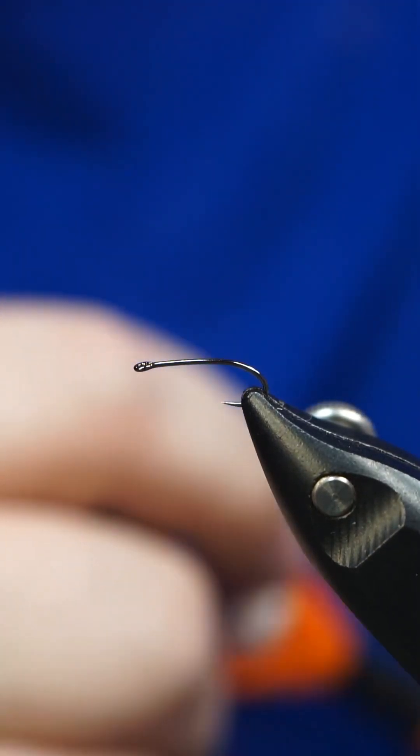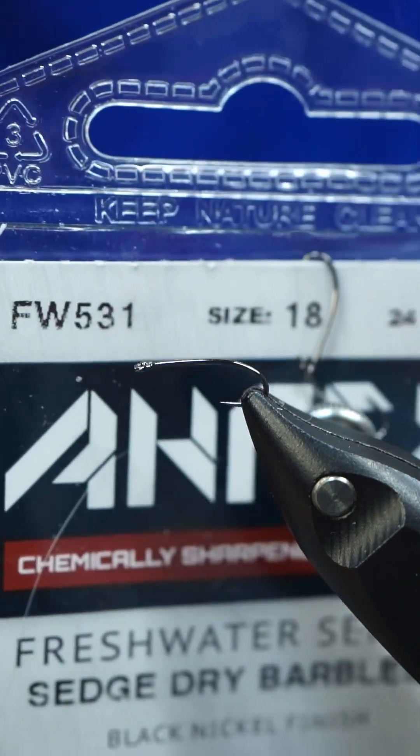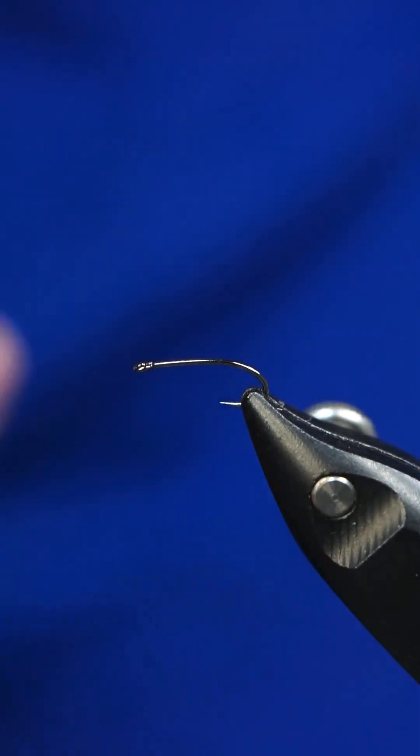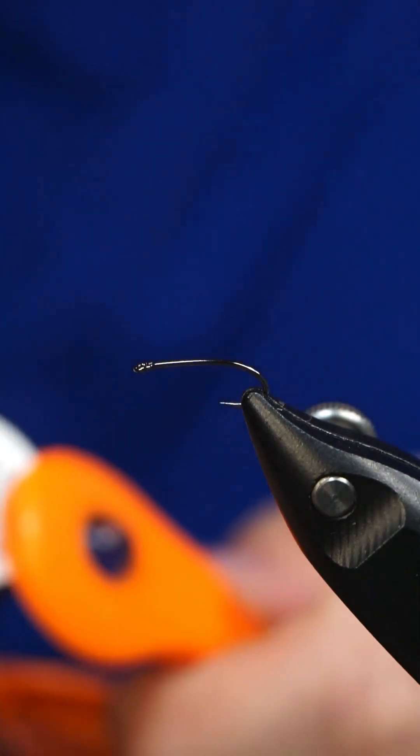All right, we're going to be tying a midge cluster here. In the vise I have an AREX FW 531 size 18 and for our thread we're going to be using 30 denier nano silk.